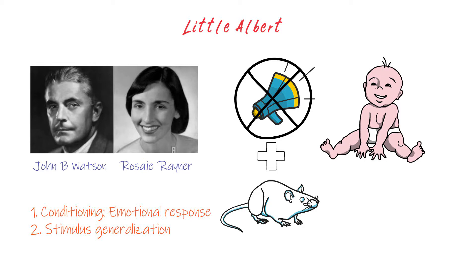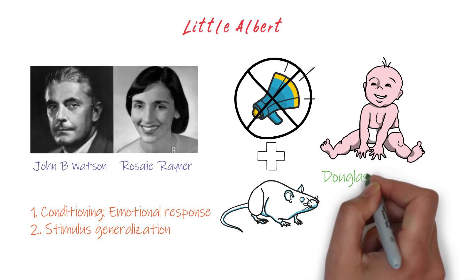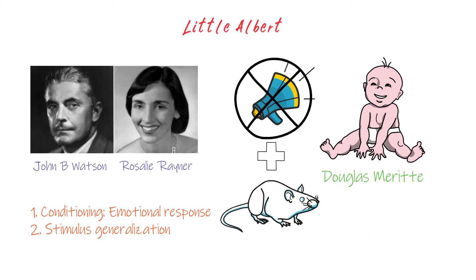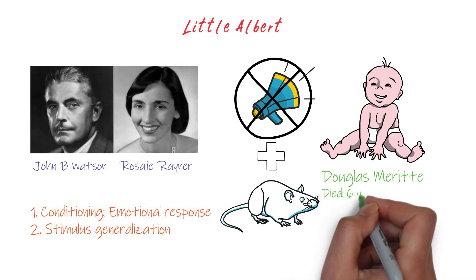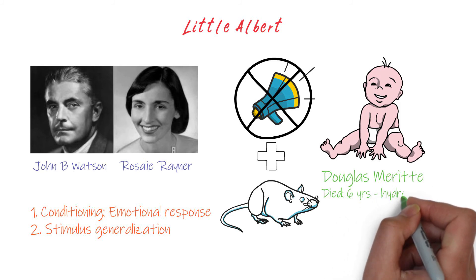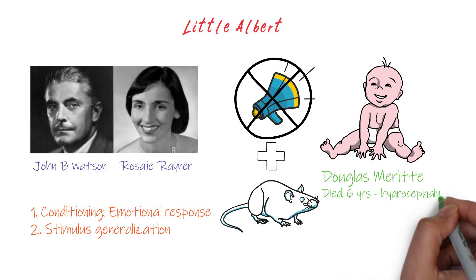In our time and age, what Watson did would be considered unethical, especially when the identity of Little Albert was revealed as a baby who suffered from hydrocephalus. Little Albert was actually a boy named Douglas. Douglas suffered from hydrocephalus since birth and died at the young age of six. When Watson published his work, he mentioned Little Albert as a healthy and normal child, which obviously wasn't true.